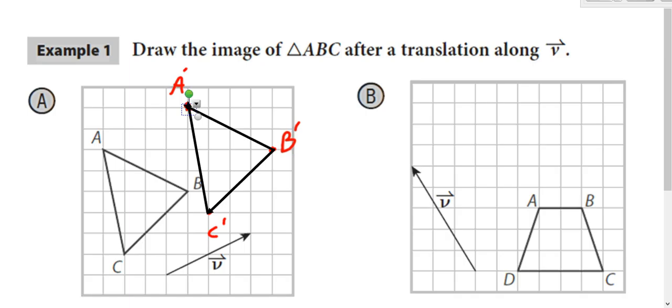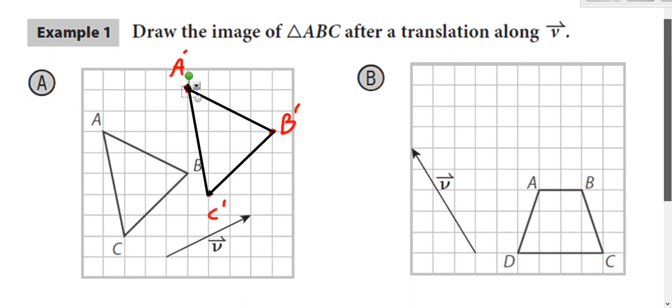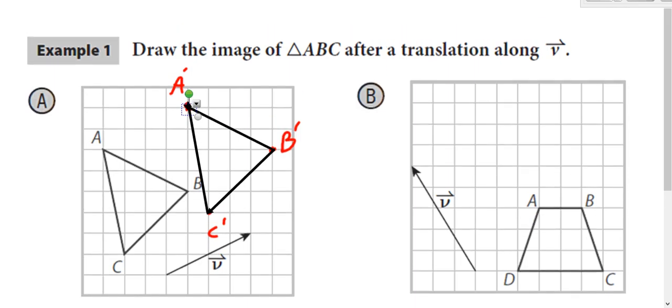Do the exact same thing with this trapezoid, example P here. This has to move three to the left and up five. So I'm going to move A three to the left and up five. And that will be A prime.